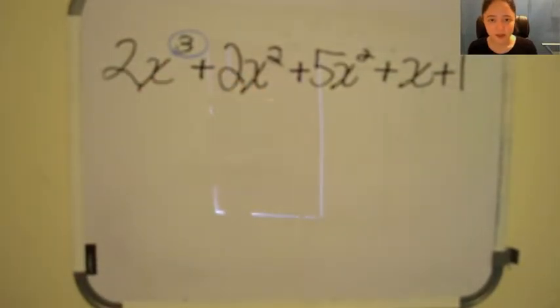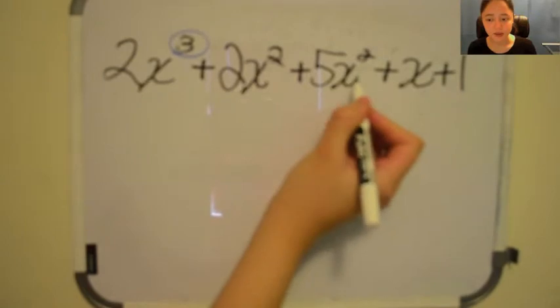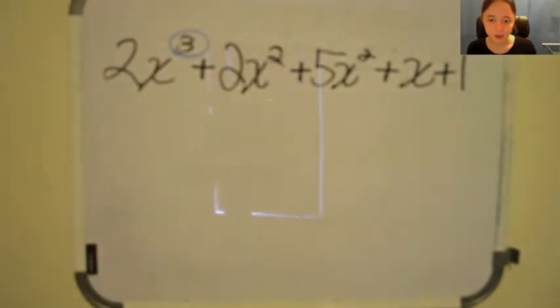Now look at the 2x squared and the 5x squared. These terms both have an exponent of 2, so these terms can be added together.